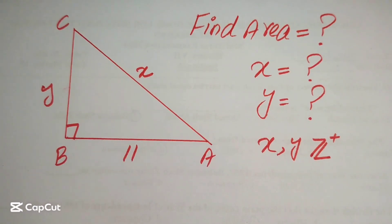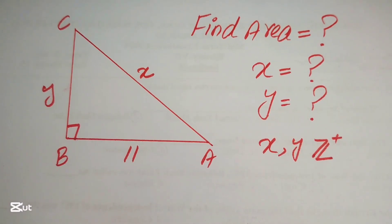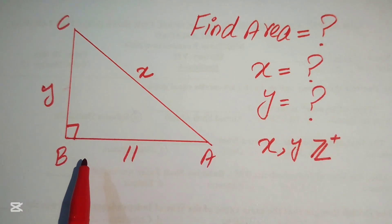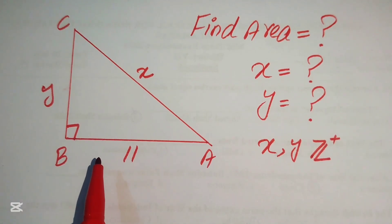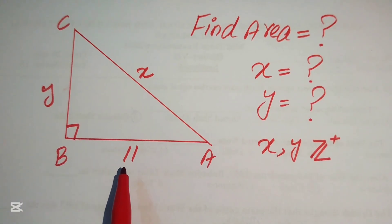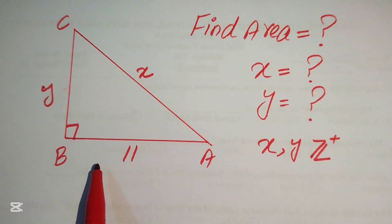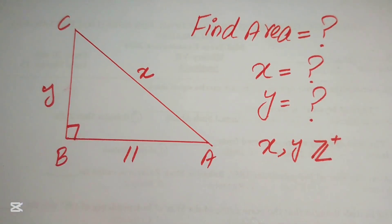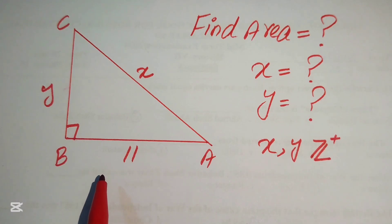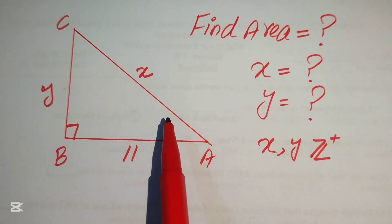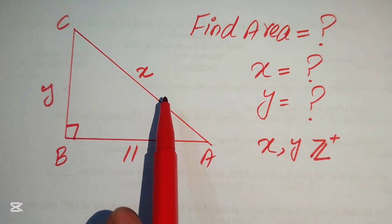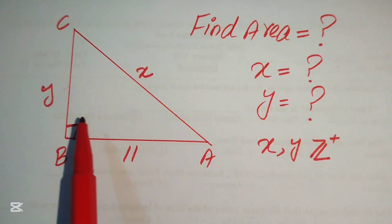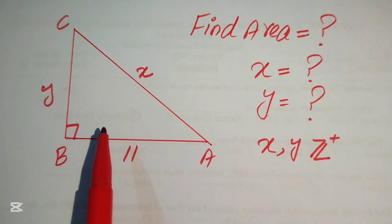Hello everyone, welcome. We have a triangle in which the length of one side is 11 and the other sides are length x and y. In this problem we need to find the area of this right triangle, as well as find the length of x and y — the lengths of sides AC and BC.